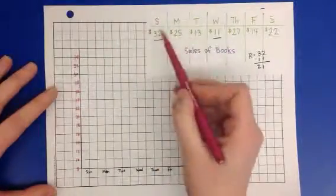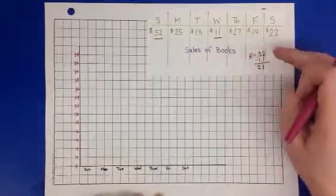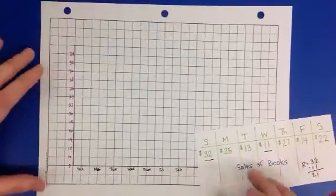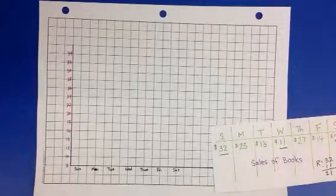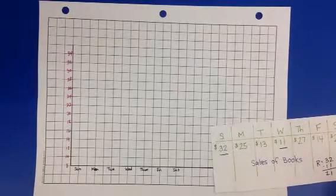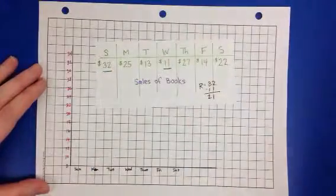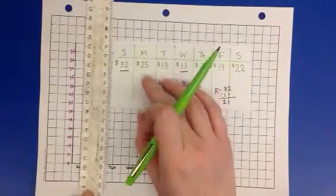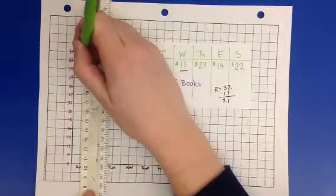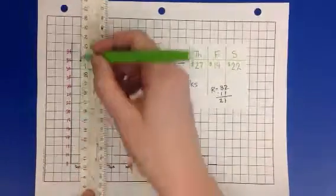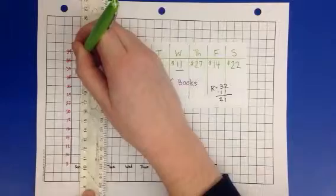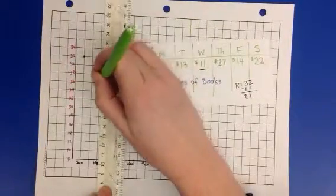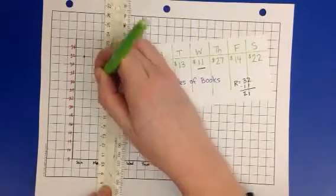I also went one beyond my largest number - I think it makes the graph look nicer when the largest number is not necessarily the biggest number in your scale. To plot a line graph, you look at your data. I'm going to use a ruler to help keep my numbers straight. Sunday is $32 worth of sales, so I'm going to put a dot on Sunday at 32. Monday sales are $25, so I know 25 is between 24 and 26, and I'm going to put a dot in the middle there.